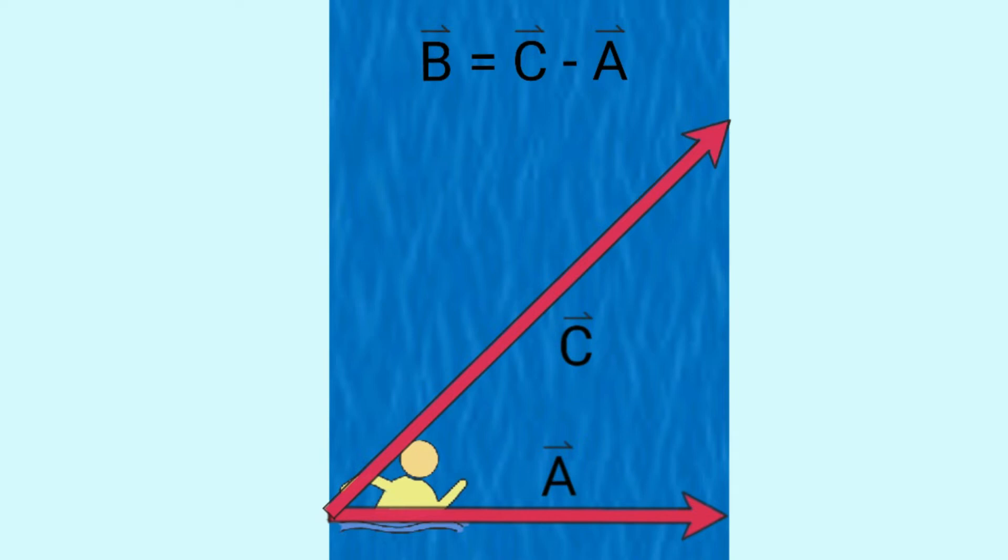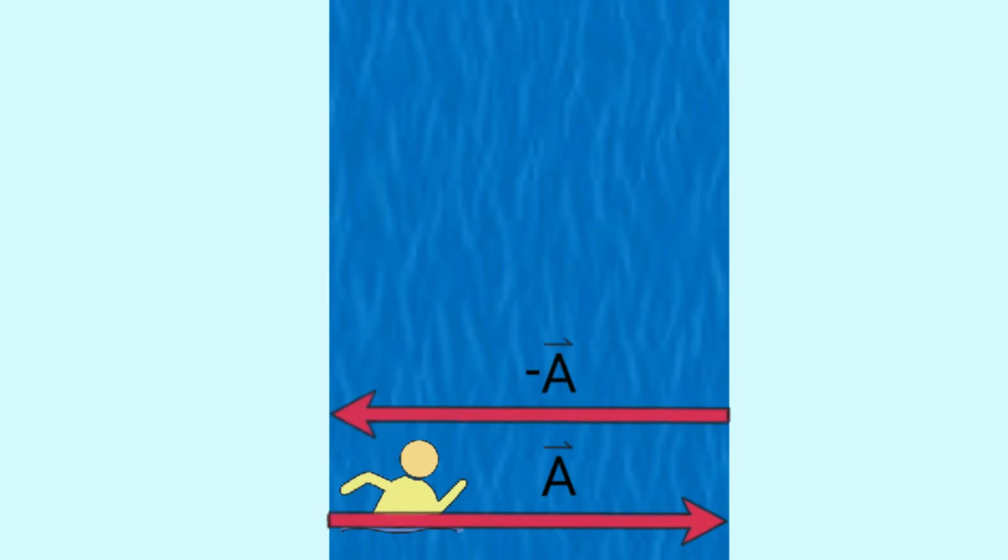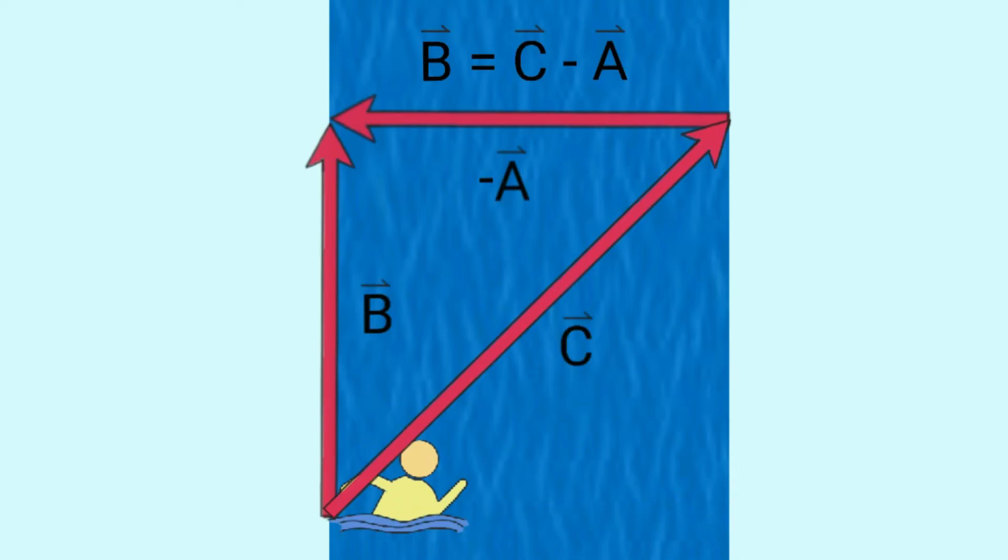Well, the negative of anything is what you have to add to it to get zero. So the negative of vector A must be the same vector, but pointing in the opposite direction, so that when you add the two together, you get zero, which means you're back at your starting point. So this is negative A. And then C plus negative A, and again add them together head to tail, equals B. So to determine the speed of the river in this example, we subtracted vector A from vector C to get vector B.